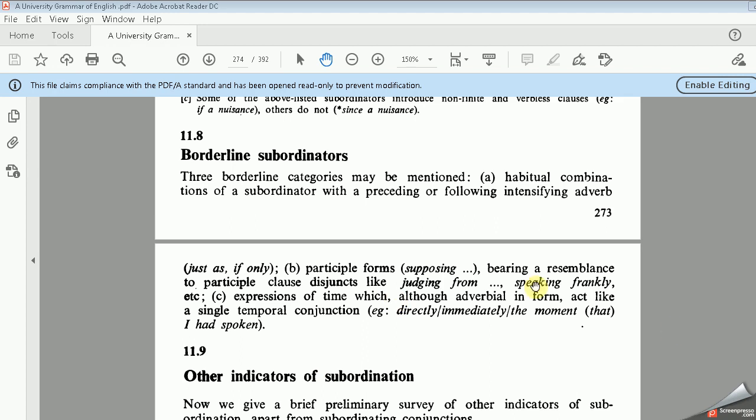In this section, he tried to give lines to what are the names or the functions of these subordinators. So he proposed three borderline categories may be mentioned.